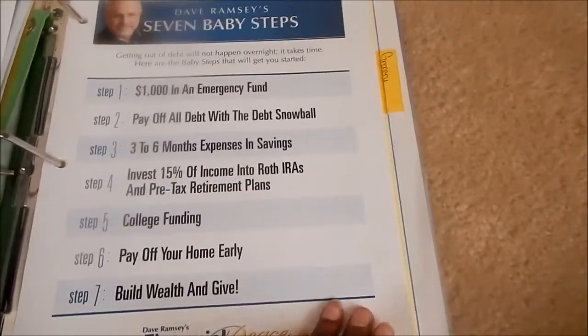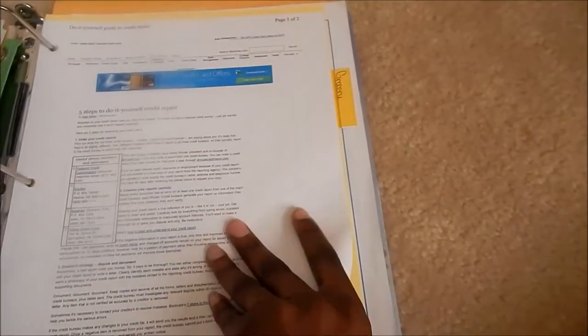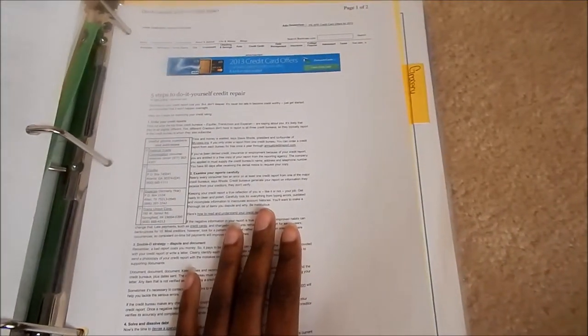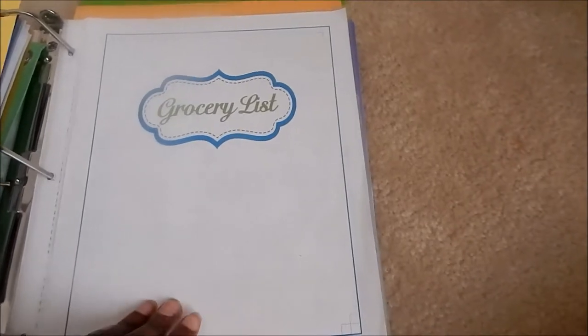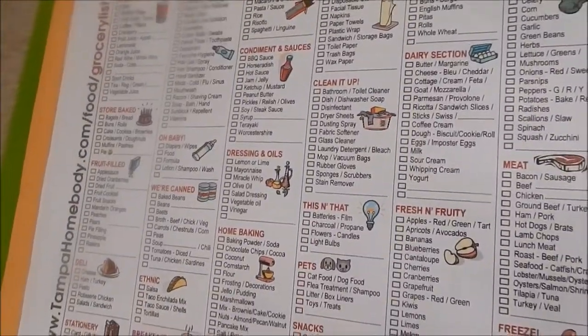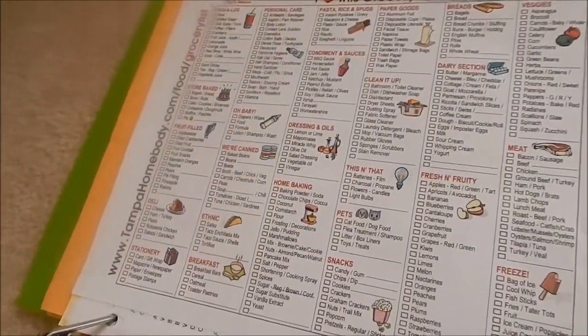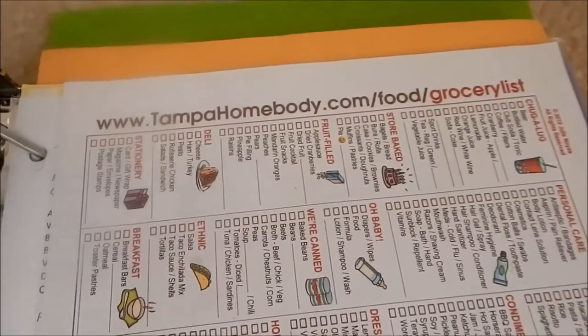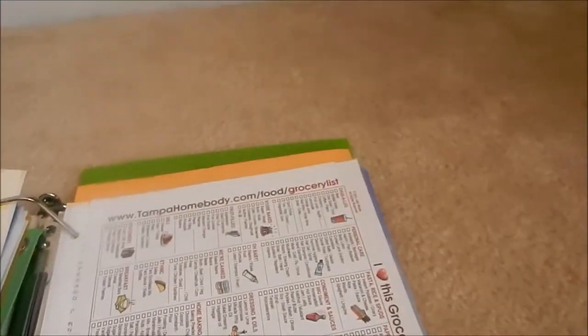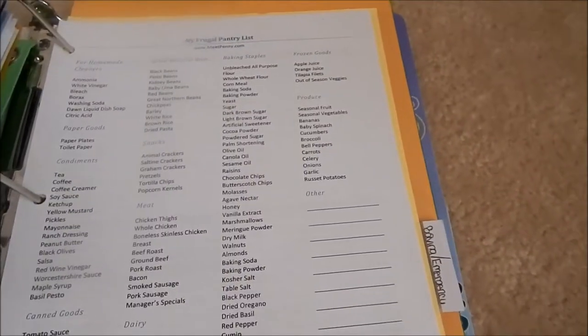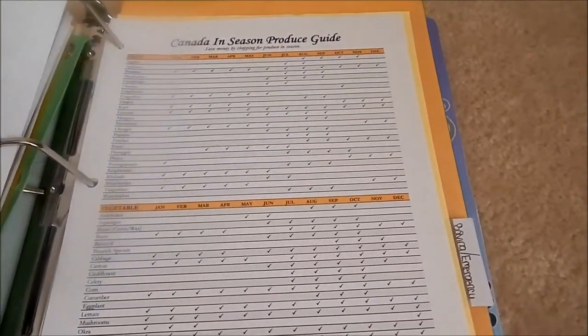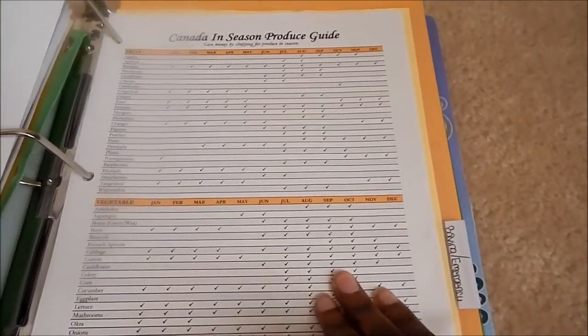I have Dave Ramsey's seven baby steps and five steps to do-it-yourself credit repair. Then I have groceries, which I'm going to move to meal plans. I have this I Heart grocery list from tampahomebody.com, frugal pantry, calendar in season, and clothing guide.